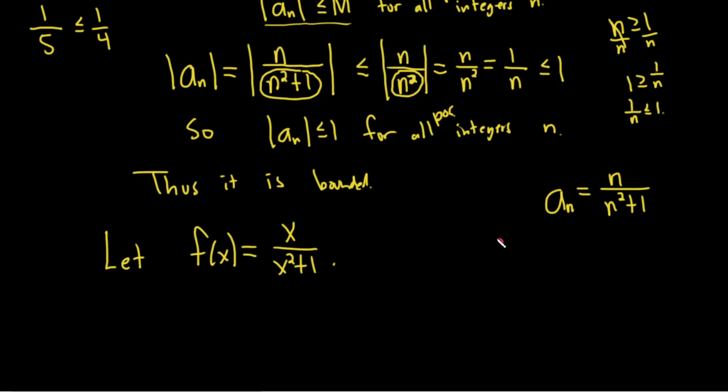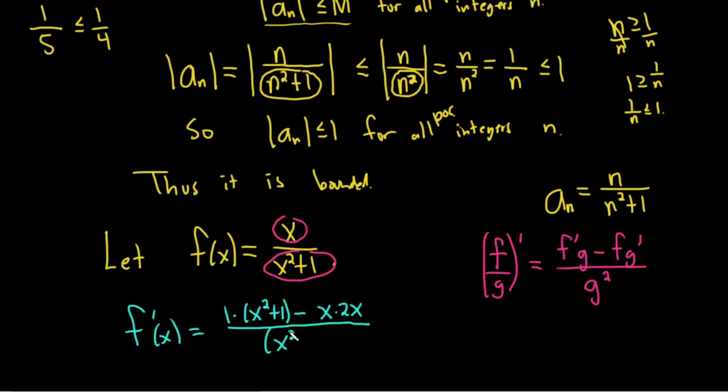So if you have f over g and you're taking the derivative, you can think of f as your top function and g as your bottom function. It's the derivative of the top times the bottom minus the top times the derivative of the bottom, which is simply 2x using the power rule,